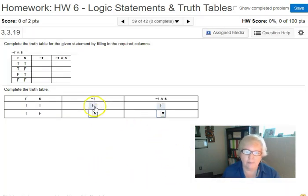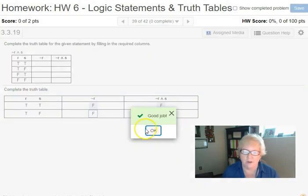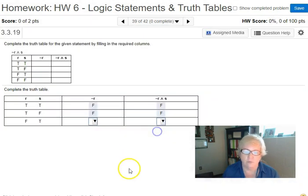I need the opposite of R. In this case, R is true, so the opposite of R is again false. Now I need not R and S. Not R is false, S is false. Since this is and, the result is false. Check answer, go to the third row.